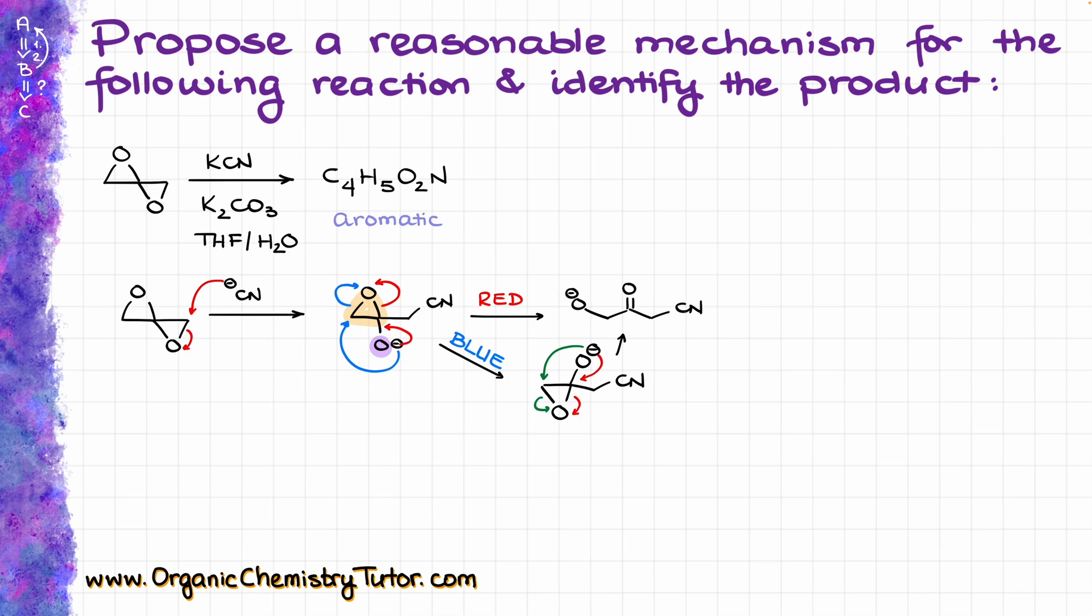So even if the attack that I'm describing with my blue arrows does happen, it still eventually at the end leads me to the same intermediate where I have a carbonyl in the middle and the cyanide on one of the ends of my molecule with the O- on the other end.